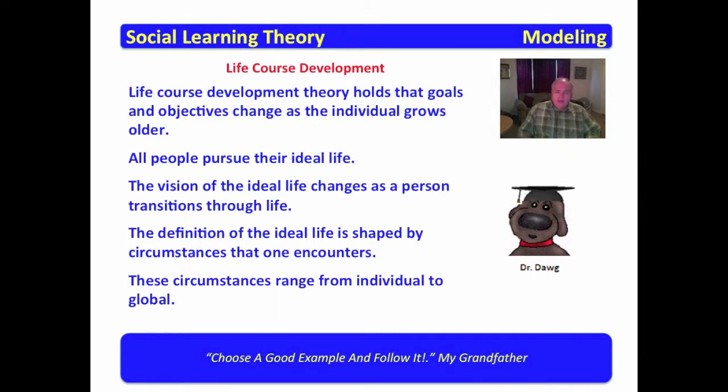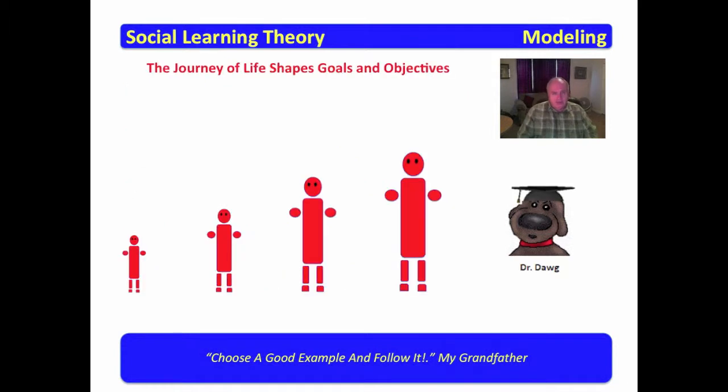You remember this sheet we had from Life Course Development. Life Course Development holds that as we journey through life, our goals and objectives change, and that we're in pursuit of an ideal life, but at different stages in our life, that ideal life may take on different forms. The vision of the ideal life for the individual is shaped by circumstances that are encountered. These may range from individual circumstances to global circumstances. You also recall this video where we examined a young individual and on up to older adulthood to talk about how those goals and objectives for the ideal life might change.